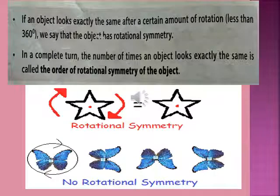Let's now understand what is the order of rotational symmetry. If the object looks exactly the same after a certain amount of rotation — naturally less than 360 degrees — we say that the object has rotational symmetry. In a complete turn, the number of times an object looks exactly the same is called the order of rotational symmetry of the object. For example, if you rotate a star, five times the star looks like itself in one complete rotation, and therefore the order of this star is five.